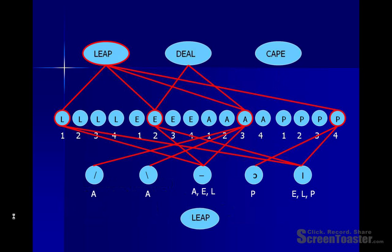For example, the letter unit for L in the first position of the word is activated, but not the units for L in other positions. The letter unit for E in the second position is activated, the letter unit for A in the third position is activated, and the letter unit for P in the fourth position is activated.